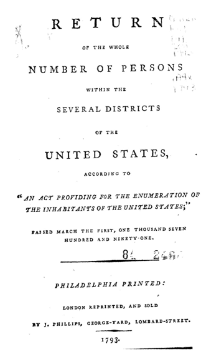The 1980 Census added several options to the race question, including Vietnamese, Asian Indian, Guamanian, Samoan, and re-added Aleut. The term 'color' was again removed from the racial question. Sample respondents were asked: In what state or foreign country was the person born? If born in a foreign country, is the person a naturalized citizen, and when did they come to the United States to stay? Does this person speak a language other than English at home — if yes, what language, and how well does the person speak English? What is this person's ancestry?